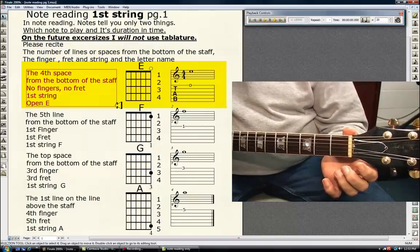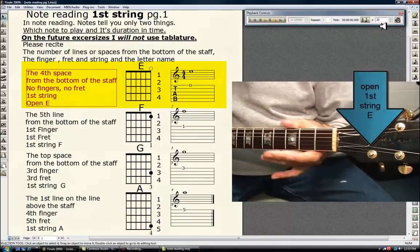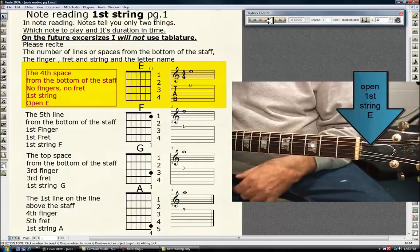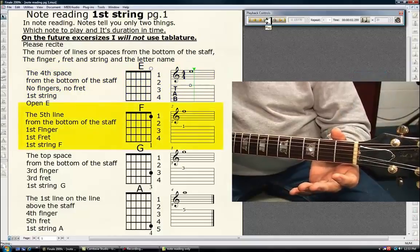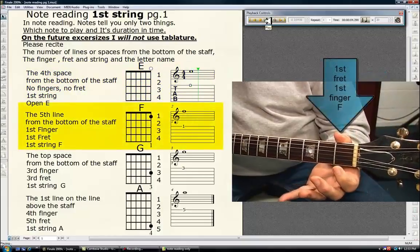of the staff, no fingers, no fret, is the first string open E. Pick. Next, the fifth line from the